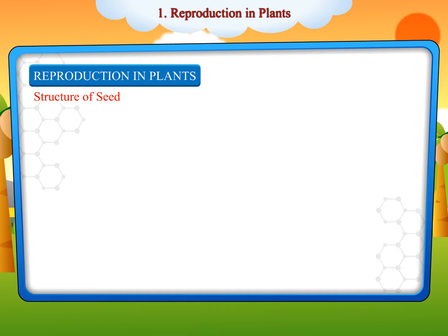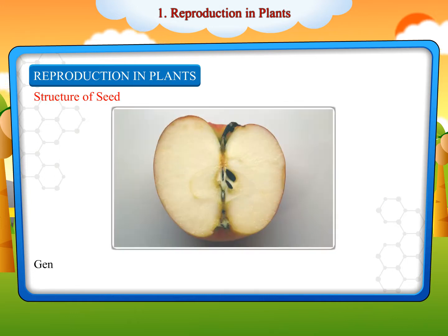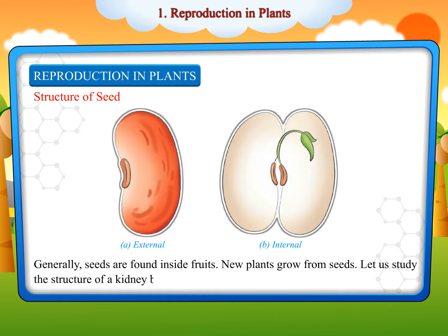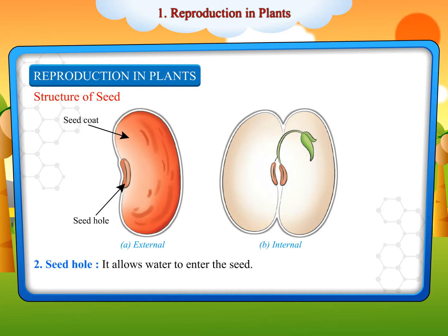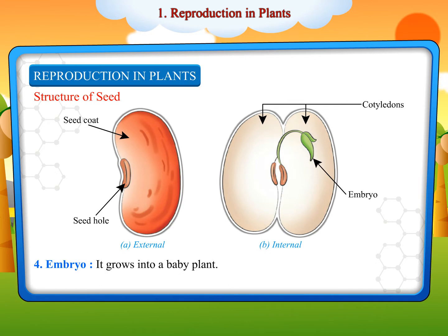Structure of Seed: A seed is a part of a plant that helps the plant to produce more individuals of its own kind. Generally, seeds are found inside fruits. New plants grow from seeds. Let us study the structure of a kidney bean seed. Seed coat: it is an outer covering that protects the baby plant inside. Seed hole: it allows water to enter the seed. Cotyledons: it stores food for the baby plant. Embryo: it grows into a baby plant.